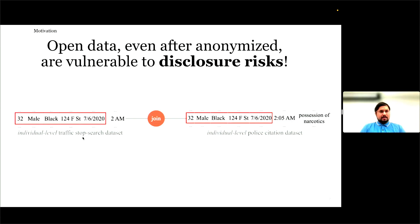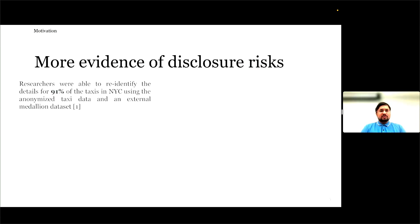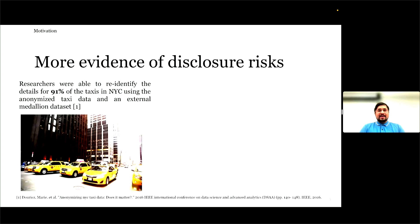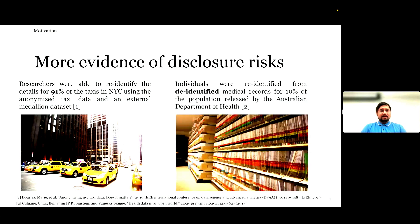Let's see some more examples. Researchers were able to identify 91% of all the taxis running in NYC using the NYC taxi open data and another external dataset. In another example, researchers were able to re-identify patients from a dataset made available by the Australian government's Department of Health.